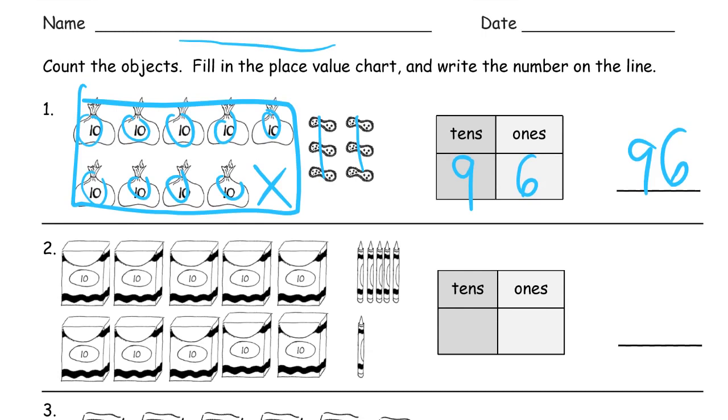Hearing yourself say it out loud is also a way to check it to make sure that what you're doing is making sense. And here we have a full ten frame of groups of ten, so that's ten tens. And here's a five group row and one more, that's six, so that's the number 106.